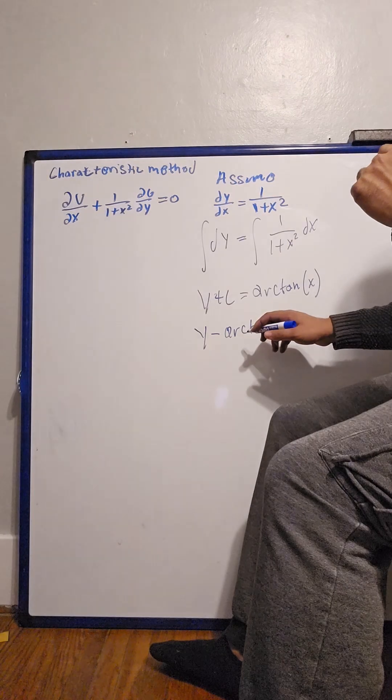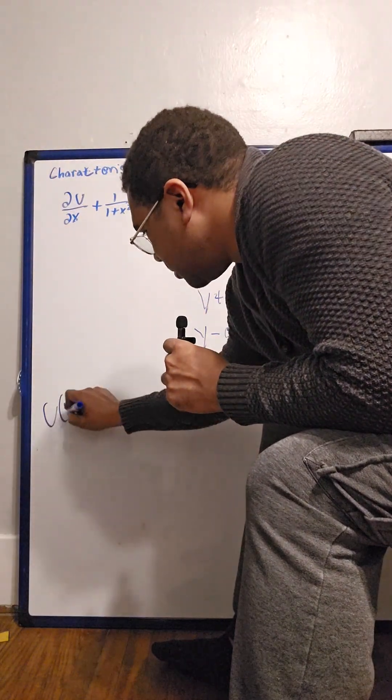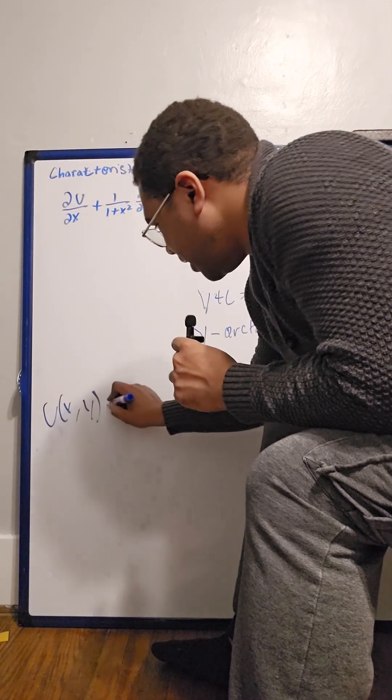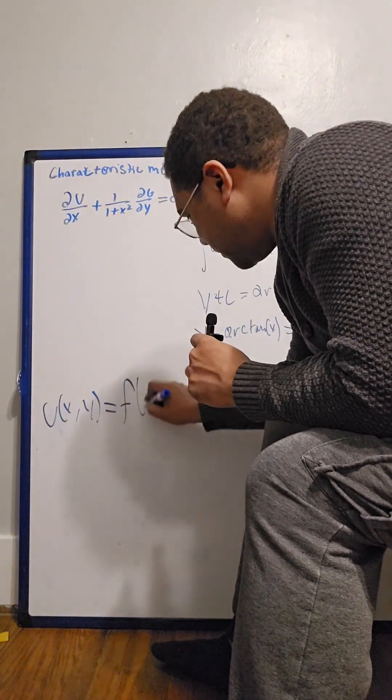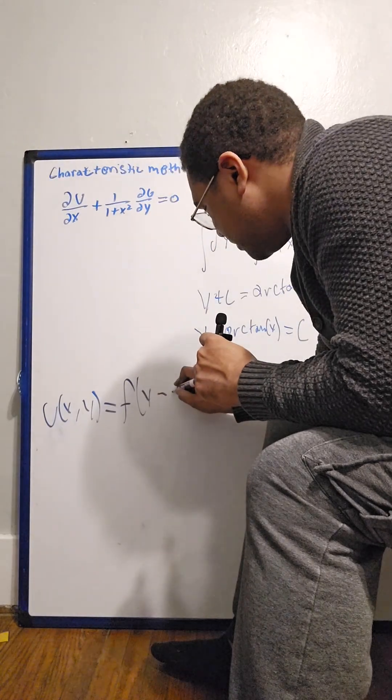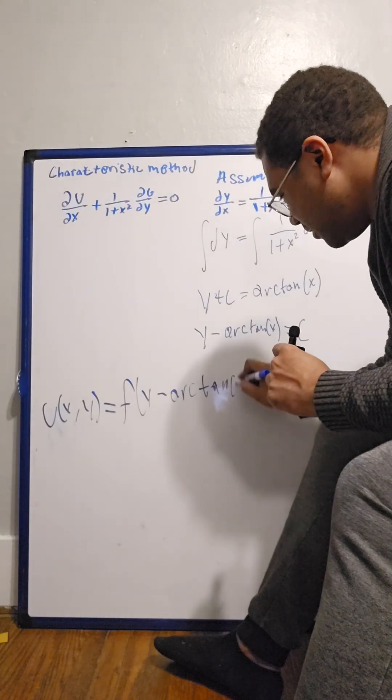So now we know our solution is going to be u of x y equal f of y minus arc tan of x. And that's our general solution.